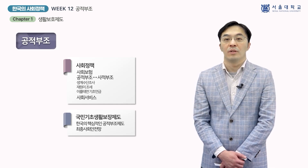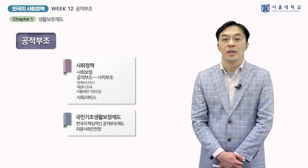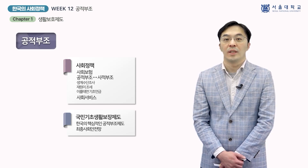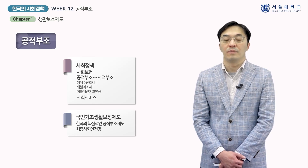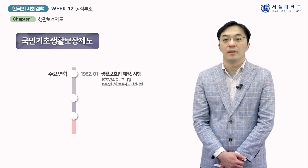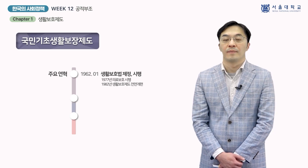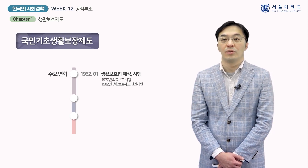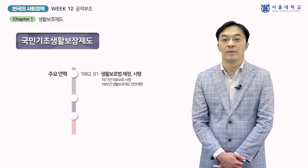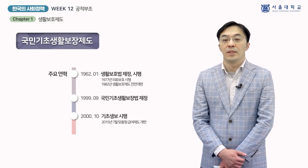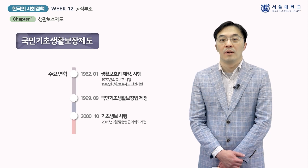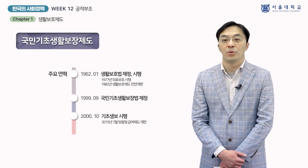현대 공적부조의 역사는 기초연금을 제외하면 1999년 9월 기초생활보장법 제정 이전과 이후로 구분할 수 있습니다. 기초생보 이전에는 기초생보의 원형인 생활보호제도가 있었습니다. 이 제도는 1962년 1월부터 2000년 9월까지 약 40년간 존속했습니다. 이 기간 중 1977년에 의료보호가 시행되었고 1982년에 생활보호제도가 전면 개편되었습니다. 1999년 법 제정으로 2000년 10월부터 기초생보가 시행됩니다. 이후 2015년 7월 맞춤형 급여제도로 개편된 후 오늘날 기초생보에 이르고 있습니다.